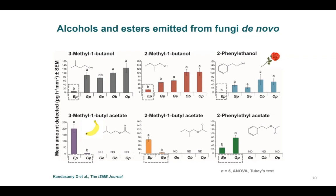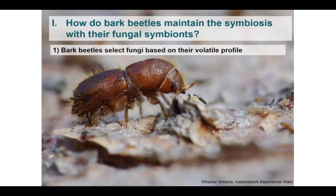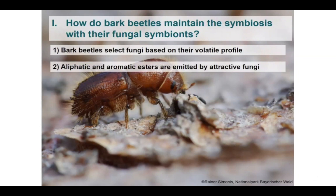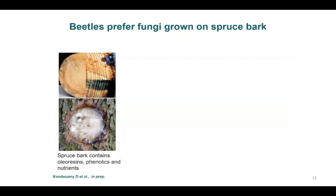Using trap bioassays, we showed for the first time that bark beetles select fungi based on their volatile profile and that volatiles mediate interactions between bark beetles and fungi. However, not all fungi are attractive to bark beetles — species that emit higher amounts of aliphatic and aromatic esters are generally more attractive. In reality, bark beetle-associated fungi colonize complex substrates such as phloem that contains terpenes, phenolics, and other nutrients. So I tested the behavior of beetles to fungi grown on spruce bark agar.